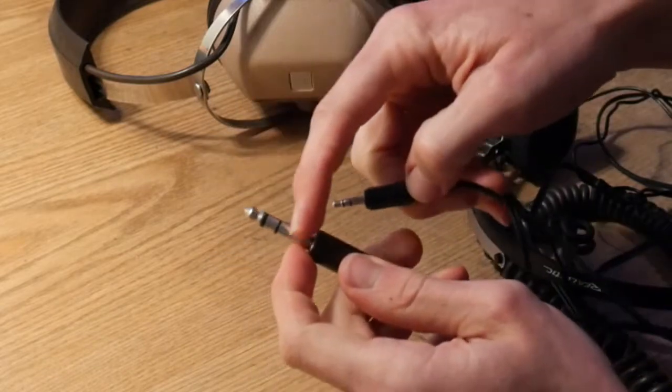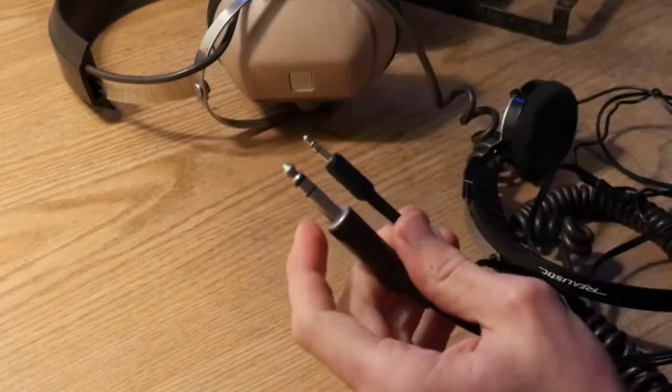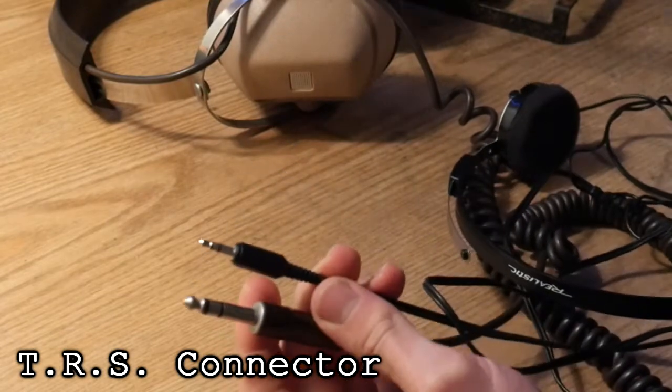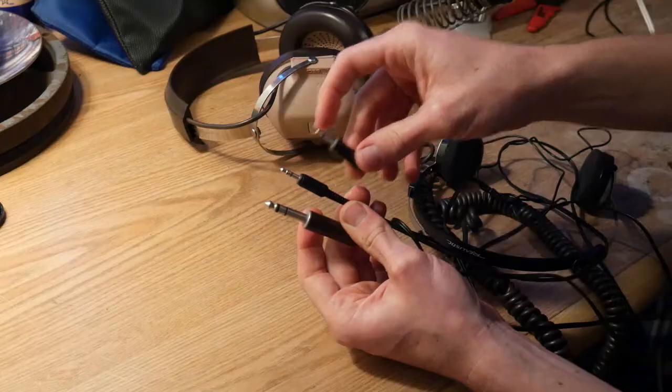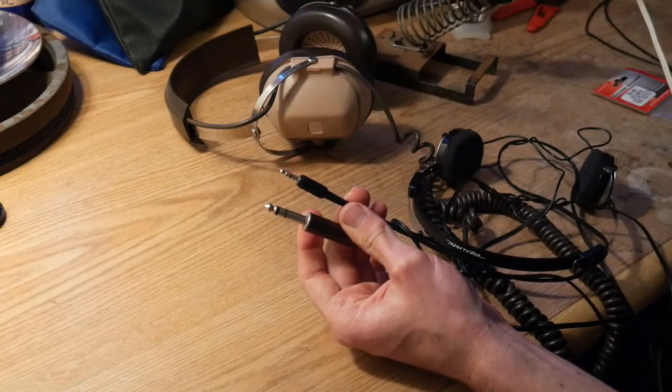They have the tip ring sleeve connector, also known as a TRS. Or, if it was mono, it would look like this with just the tip and the sleeve. Definitely don't want to use this, otherwise you get two left channels out of both ears.